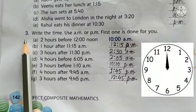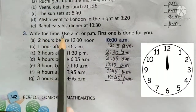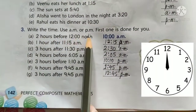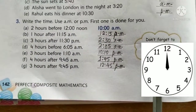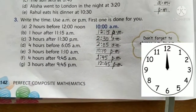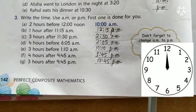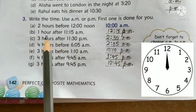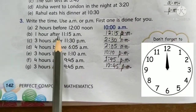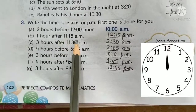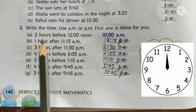Let's do Question 3 now. Write the time — use AM or PM. Please don't forget to change AM to PM or PM to AM when you cross 12 o'clock. If while changing the time you have to cross 12, then AM will become PM and PM will become AM.